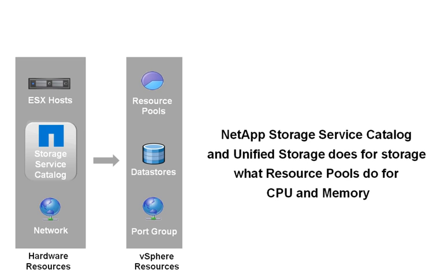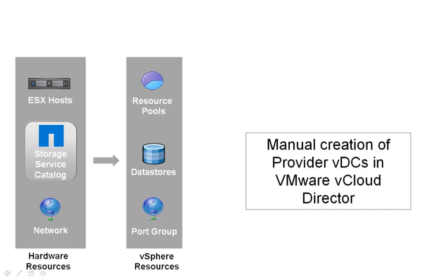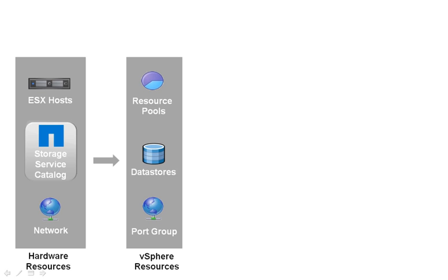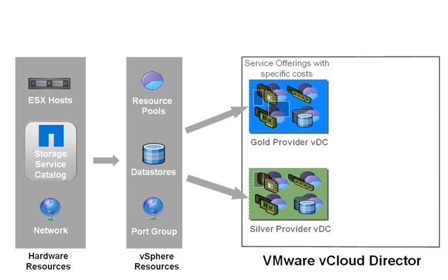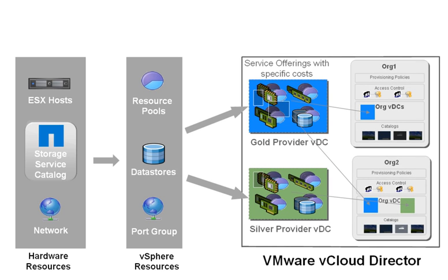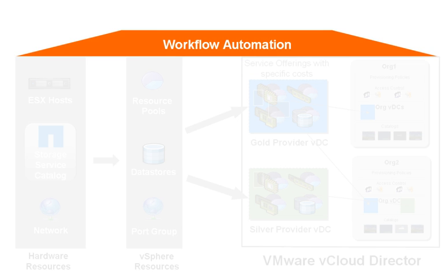Cloud admins traditionally have fine control over CPU and memory resources for virtual data centers. With NetApp's storage service catalog, they don't need to understand the storage array attributes and are able to provide the same level of control for data stores. To make infrastructure resources available in vCloud Director, this still requires manual creation of provider VDCs. Based on individual tenant demands, org VDCs can be created from the provider VDC. To achieve higher levels of operational efficiency and rapidly deliver services to tenants, it requires automating the entire process of provisioning vSphere resources and creating provider virtual data centers in VMware vCloud Director.